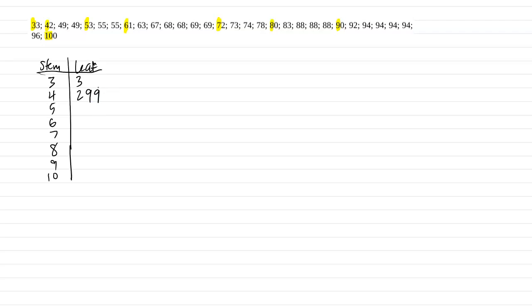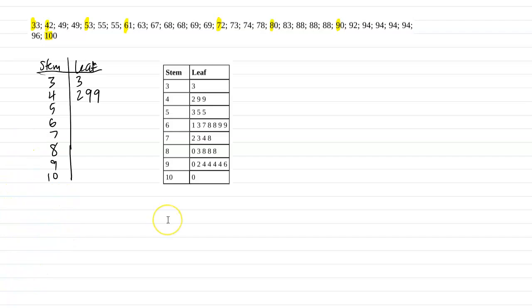When you complete the entire stem and leaf plot — I have that conveniently created — here is the completed stem and leaf plot. Notice that if you count all the leaves going down each row, adding them all up across the entire graph, that total tells you how many data values there are.